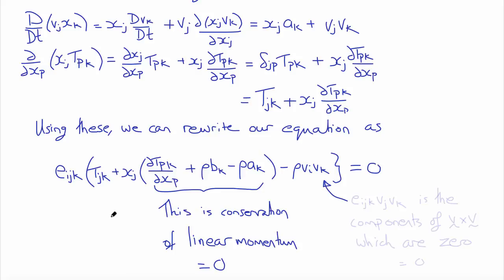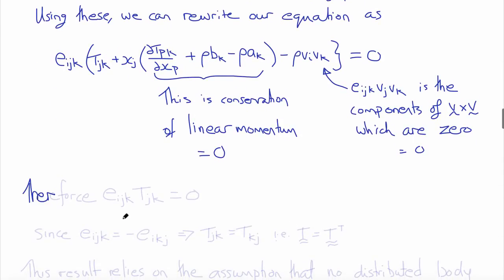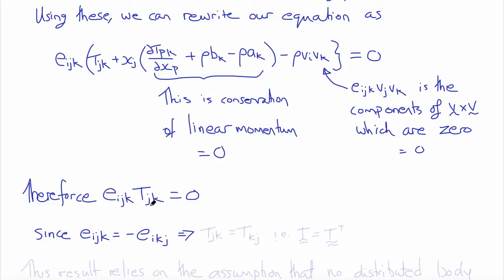We observe that E_ijk times V_j V_k are components of the cross product of v with itself, but the cross product of a vector with itself is zero because the sine of the angle between the two vectors is zero. So this term disappears as well, and we're left with E_ijk times T_jk equals zero. Recognizing that E_ijk equals negative E_ikj — obtained by switching indices k and j — the only way this can sum to zero is if T_jk equals T_kj, in other words, if the Cauchy stress tensor is symmetric.